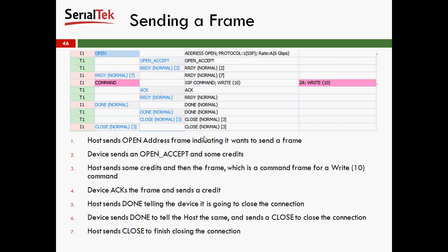When sending the frame, the host sends out an open address frame indicating it wants to send a frame. The device sends an open accept, issues a couple of credits, and then the host issues a couple of credits. Then the command comes out — it's a Write 10 — which the device will acknowledge and send a ready, saying it's received it and providing another credit. The host will then send done, meaning it's finishing up and closing the connection soon. The device sends a done normal and then a close normal, and the host responds with a close to finish closing the connection.